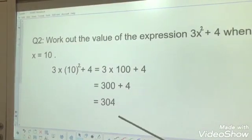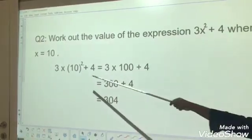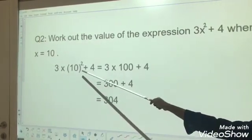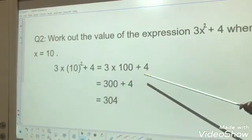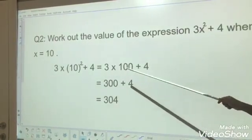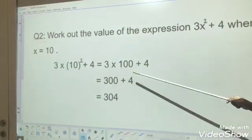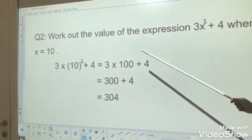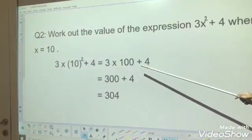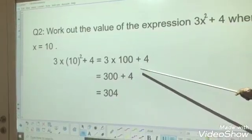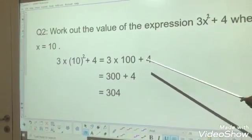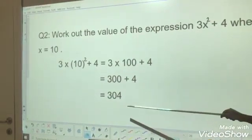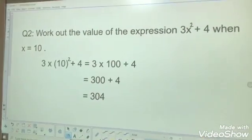Brackets and indices should be done first. So 10 raised to 2, that you have to do first itself. What is 10 raised to 2? That is 10 multiplied by 10, you will get 100. Then do the balance. Just multiply it. 3 multiplied by 100, you will get 300. Then 300 plus 4, you will get 304.